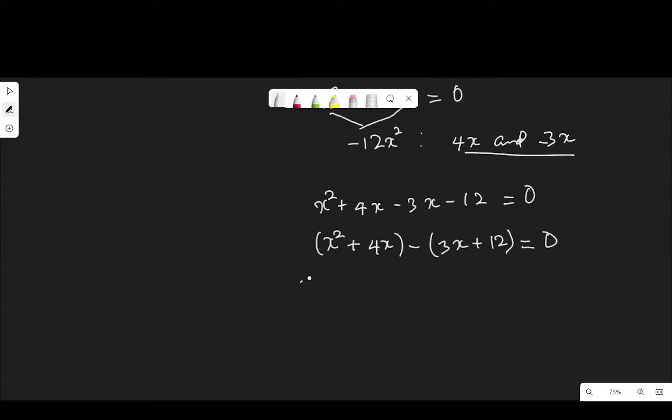In the first bracket, X is common. We will factor it out. X plus 4. In the second bracket, 3 is common. X plus 4 equal to 0. So we have a common factor of X plus 4. So we pick it and then group this and this together. X minus 3 equal to 0.